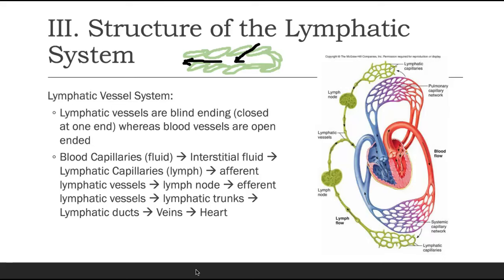The lymph pathway begins at the blood capillary. Fluid moves into the interstitial tissue, becoming interstitial fluid. That fluid enters the lymphatic capillaries and is now called lymph. From there it travels through an afferent lymphatic vessel — afferent meaning incoming — into the lymph node, then out through an efferent lymphatic vessel — efferent meaning outgoing. It then moves into a lymphatic trunk, which drains into a lymphatic duct, which drains into a vein and returns to the heart at the right atrium.